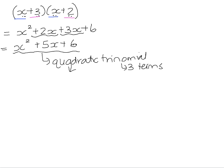The word quadratic in mathematics is used to describe an expression whose highest power is 2. So if you look at the answer, you can see that the highest power on the variable is x squared. The middle term is x to the power of 1, and then we have a constant at the end.